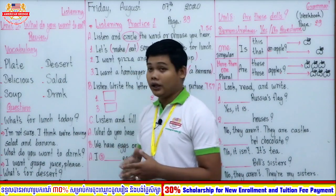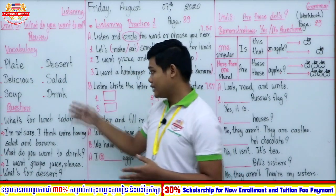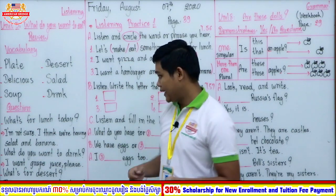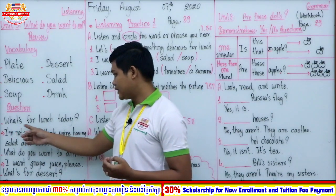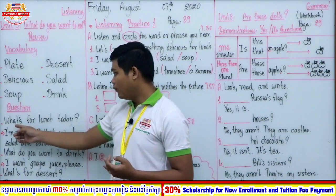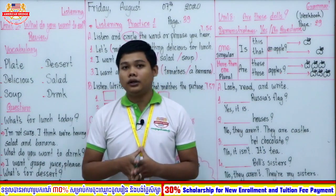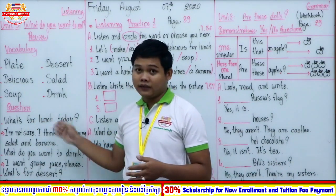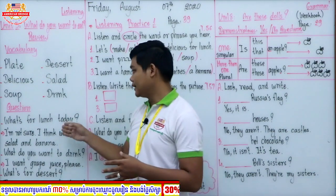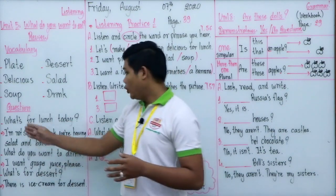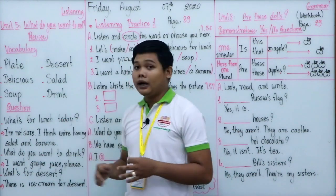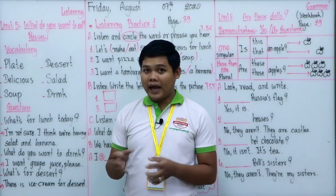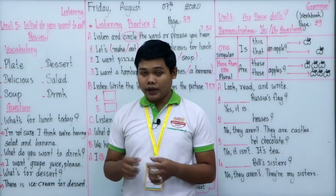Now we have reviewed the six vocabulary words from our previous video. Let's move to the three questions. For number one: 'What's for lunch today?' — what does this question mean? It means: what food do we have for lunch today?